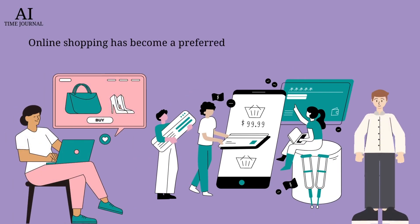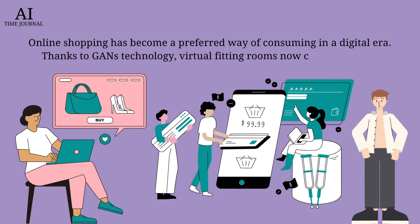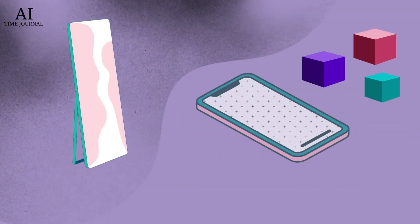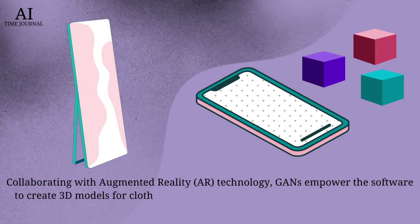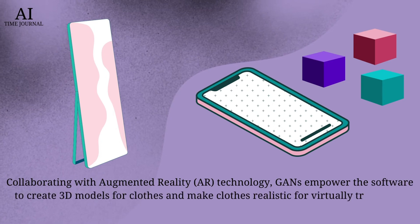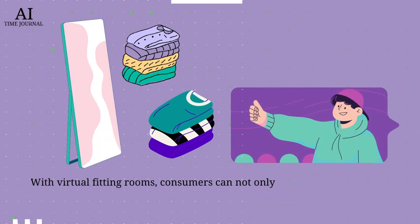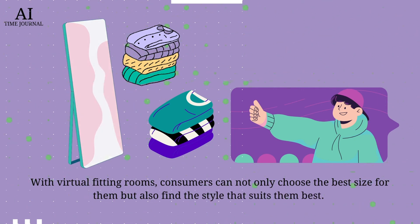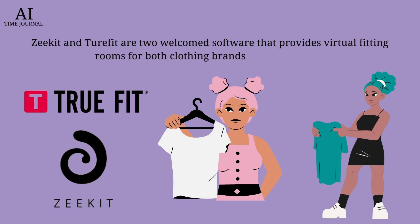Online shopping has become a preferred way of consuming in the digital era. Thanks to GANs technology, virtual fitting rooms are now a reality. Collaborating with augmented reality technology, GANs empower software to create 3D models for clothes, making virtual try-ons realistic. Consumers can choose the best size and find styles that suit them best. Zkit and Turfit are both softwares that provide virtual fitting rooms for clothing brands and consumers.